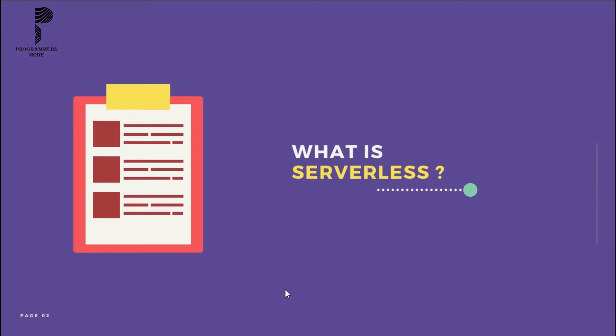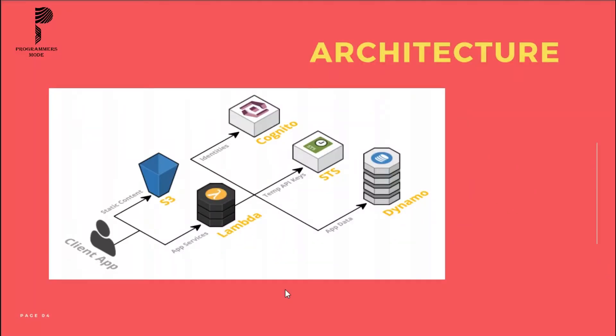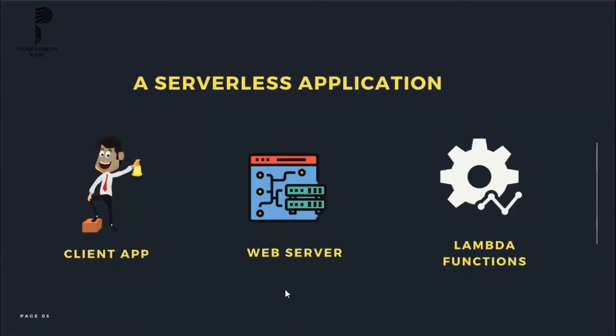Let's talk about a Serverless Architecture. A serverless solution consists of a web server, a Lambda function, Security Token Services also known as STS, user authentication, and finally a database. Here I will talk with respect to Amazon. The UI of your application is rendered client-side in a modern front-end JavaScript app, which allows us to use a simple and static web server.